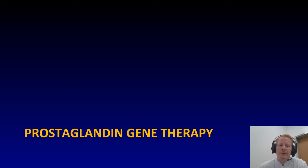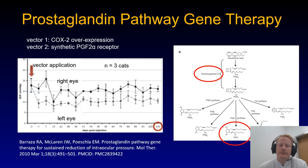Prostaglandin gene therapy. You can see here a prostaglandin pathway that uses two components: cyclooxygenase and PGF2-alpha. When both are injected into a cat eye, this lowers the intraocular pressure for quite some time.